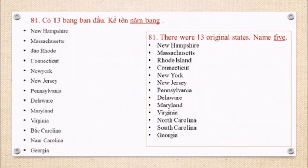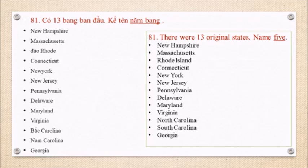Question 81: There were 13 original states. Name five. New Hampshire, Massachusetts, Rhode Island, Connecticut, New York, New Jersey, Pennsylvania, Delaware, Maryland, Virginia, North Carolina, South Carolina, Georgia.